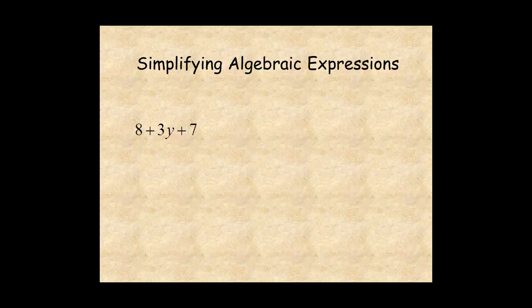Notice this expression has one variable term and two constant terms. The variable term is left alone. You combine the two constant terms. Rewrite the expression so the two constant terms are side by side. Then, combine the terms for 3y plus 15.